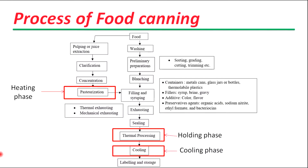In general, the sterilization process of canned or packaged products can be subdivided into three phases: the heating phase, holding phase, and cooling phase. During the heating phase, water or steam is applied as the heating medium. The temperature of the product is increased from ambient temperature to the required temperature to achieve sterilization.